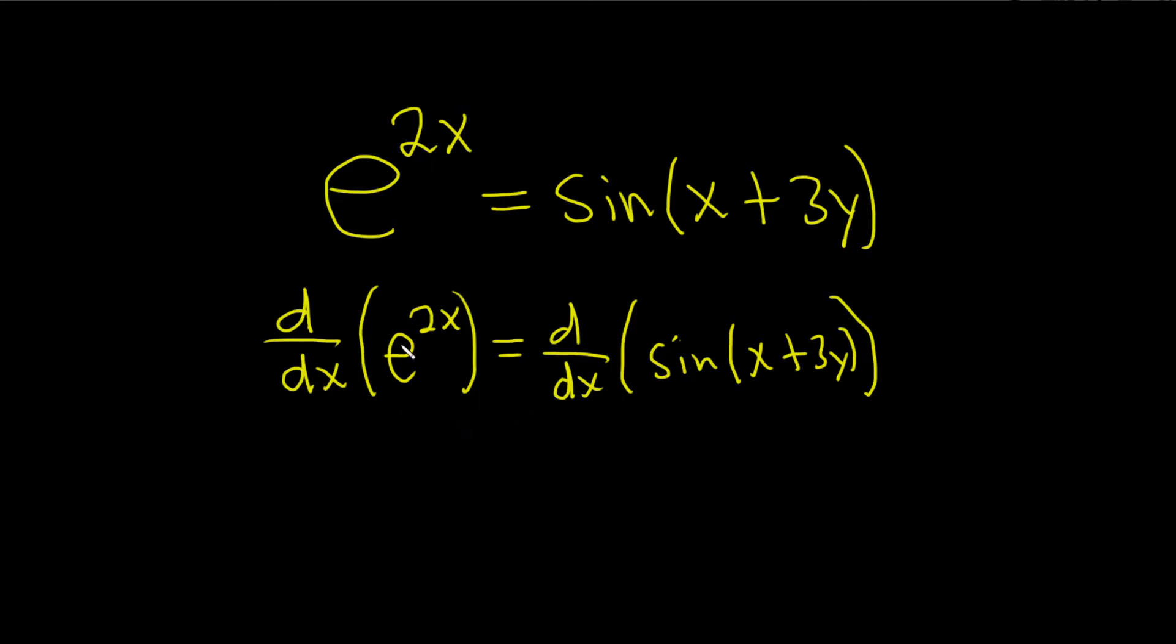On the left hand side, the derivative of e^x is e^x, but here it's e^(2x) so we have to use the chain rule. So it'll be e^(2x) times the derivative of the inside function. Our inside function is 2x and its derivative is 2.